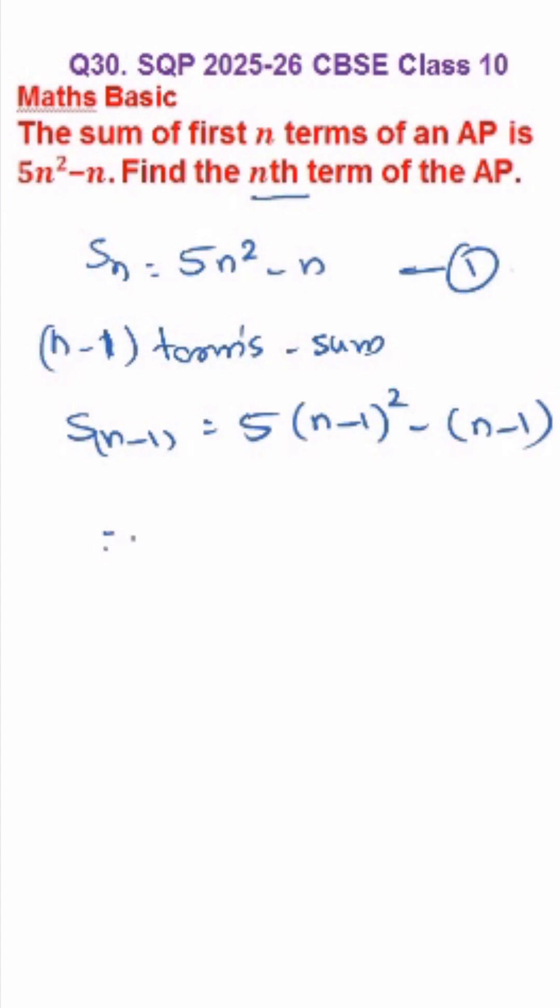So expanding, we will get 5 into n square minus 2n plus 1 minus n minus 1.